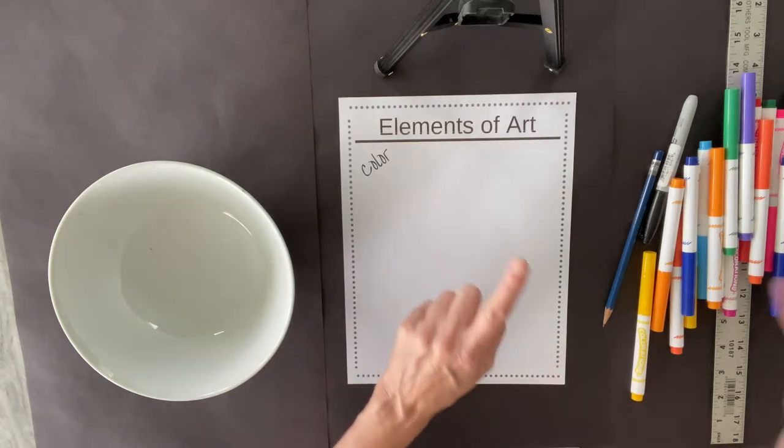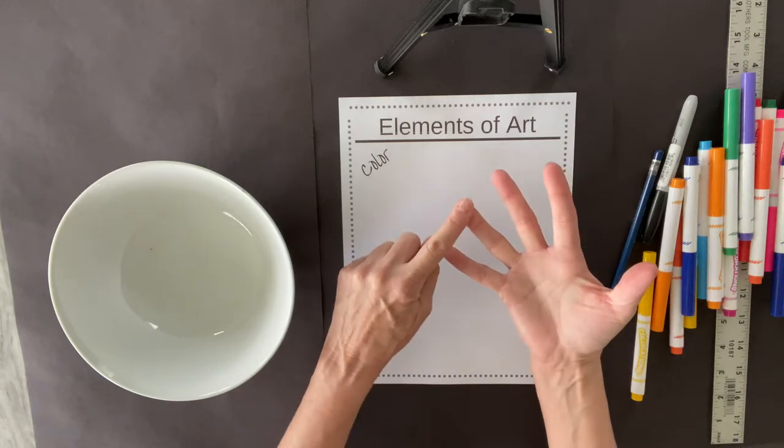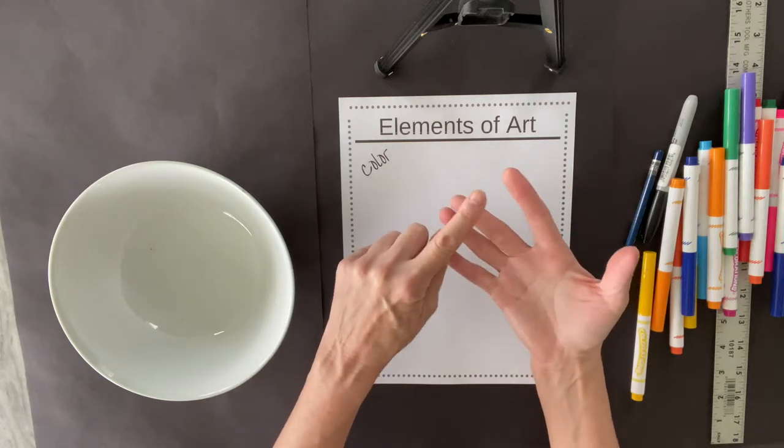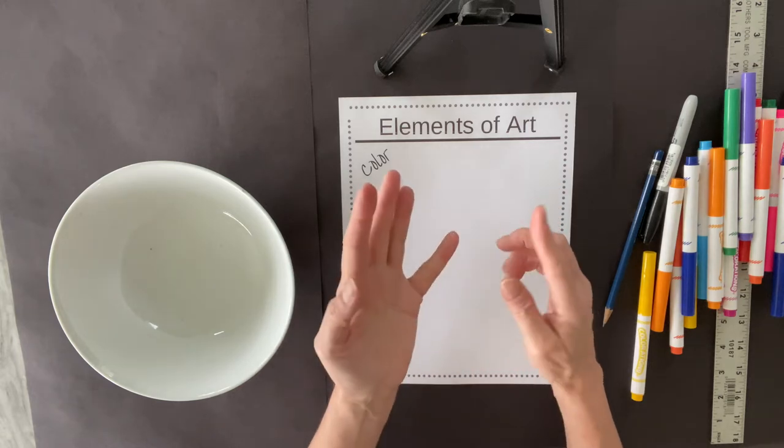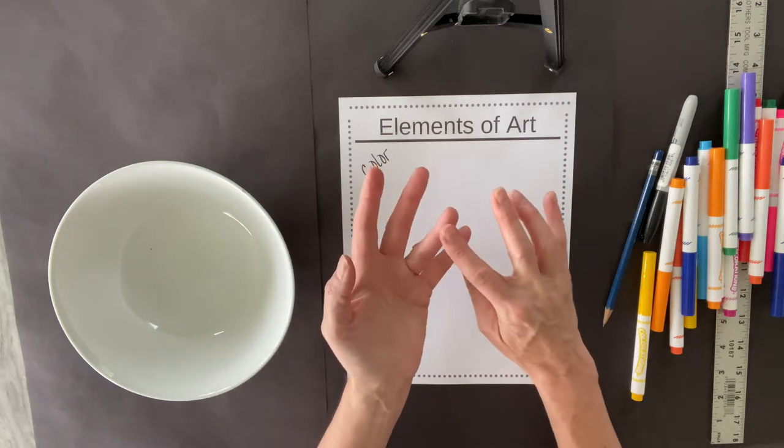We've already talked about line, shape, form, and value. Today we're going to talk about color, and if there's time, we're going to do texture and space.